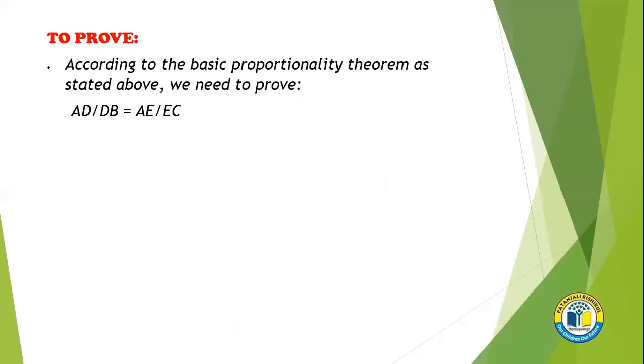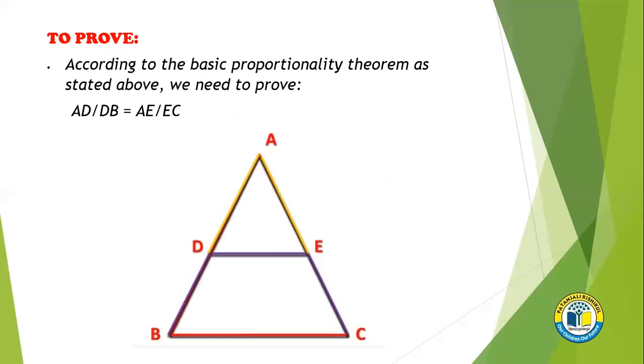Now we have to prove the ratio of these sides are equal. That is, AD upon DB is equal to AE upon EC.